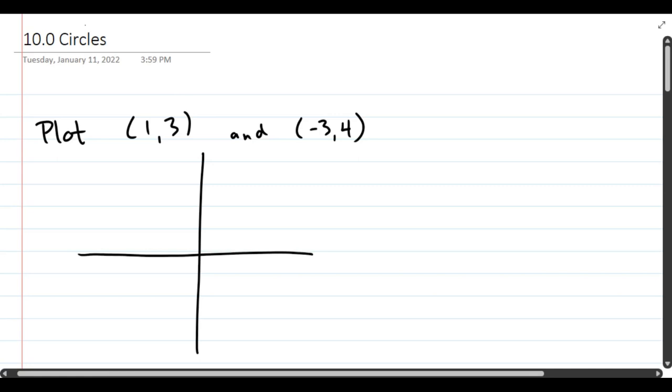I'm not going to use graph paper, because most likely you're not using it either. And I want my notes to look very similar to your notes. So I'm going to plot 1, 3, 1 to the right, and the x, 3 up. There's one point, and the other one's at negative 3, 1 and 4, so left 3 up 4.